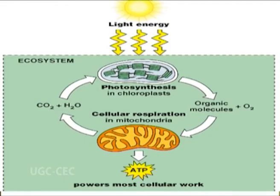Plant cells use some of the glucose produced during photosynthesis for respiration, that is, release of energy to power the cell functions. Plants need energy from sugars to power their own life-supporting systems, just as we do.